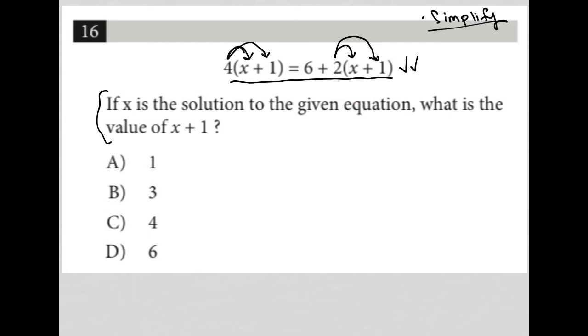If I do 4 times x, I get 4x, and then 4 times 1, I get plus 4, equals 6 plus 2 times x is 2x, and 2 times 1 is 2, and 6 plus 2 is 8. So this becomes 2x plus 8 equals 4x plus 4.